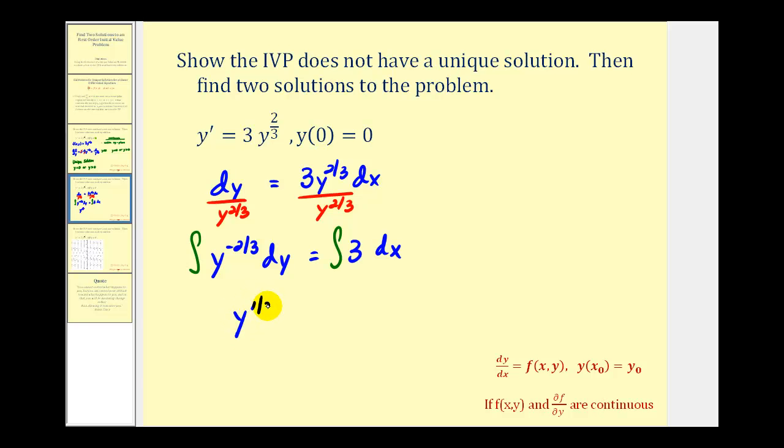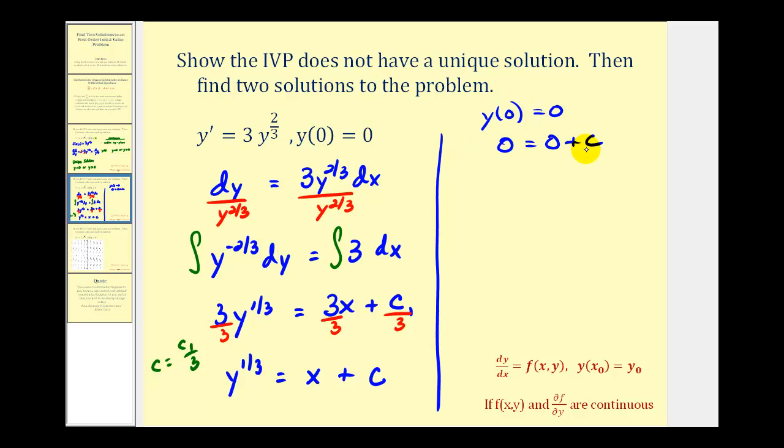Applying the power rule here, we're going to add one to the exponent and then divide by the new exponent. So we'd have y^(1/3) divided by 1/3, or times 3, which must equal 3x. Let's put the constant of integration on the right side, so we have plus c₁. Let's divide everything by three, so we have y^(1/3) = x + c₁/3. Let's call that c, another constant, where c = c₁/3. Now using our initial condition y(0) = 0, if we substitute zero in for x and zero in for y, we would have 0 = 0 + c, so our constant of integration is just zero.